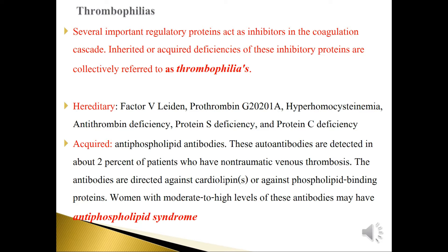These autoantibodies are detected in about 2% of patients with non-traumatic venous thromboembolism. The antibodies are directed against cardiolipins or phospholipid-binding proteins. Women with moderate to severe levels of these antibodies may have antiphospholipid syndrome.